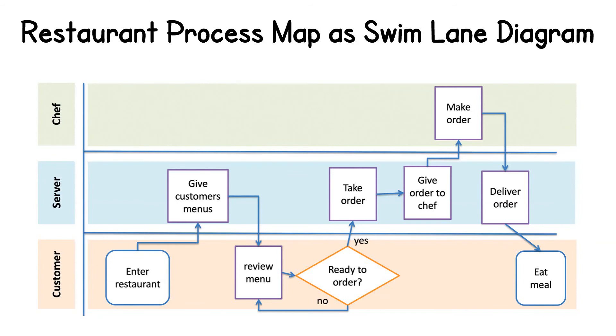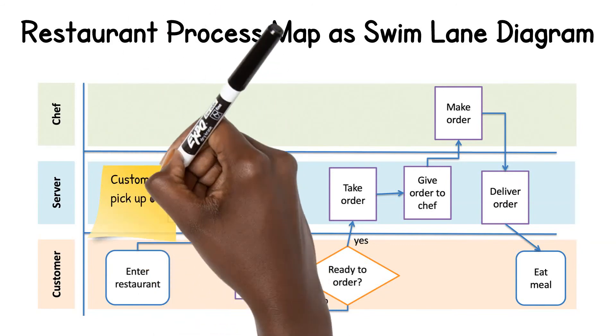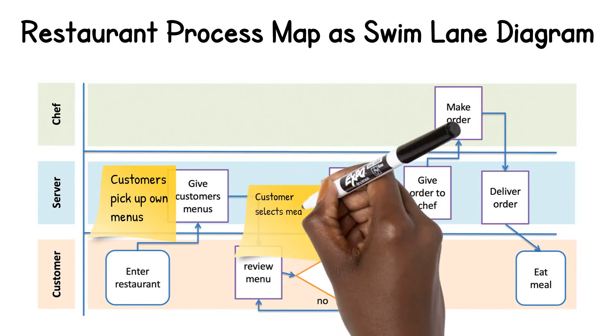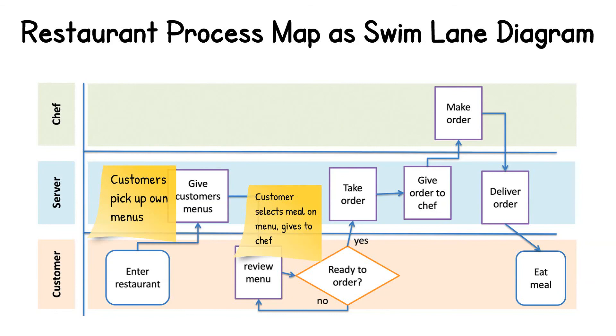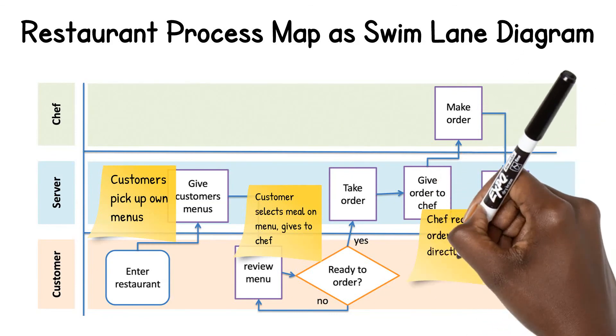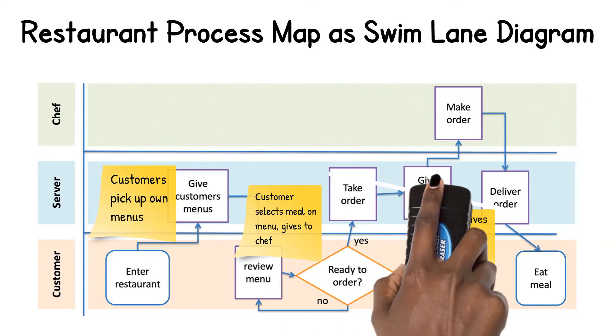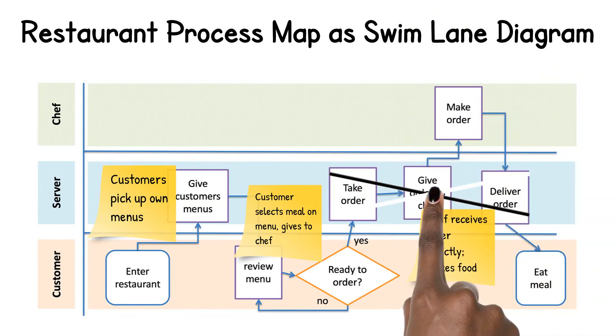Process maps and swim lane diagrams can also be used as a starting point to brainstorm ideas to improve processes. Quality improvement teams will often look at the swim lane diagram together and add post-it notes to where they think the process can be improved. In this restaurant example, the brainstorming team has added post-it notes to eliminate the role of the server.